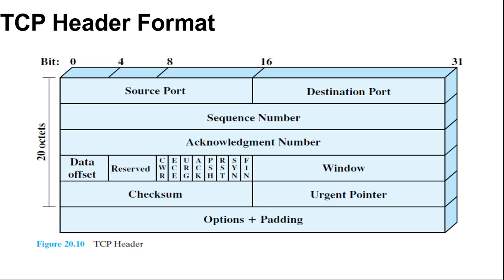Next flag is URG: urgent pointer field significant. Then ACK: acknowledgement field significant. Then PSH for push function. RST for reset the connection. SYN to synchronize the sequence number. FIN for no more data from sender (finish). Next is window, 16 bits: flow control credit allocation in octets. It contains the number of data octets beginning with the sequence number indicated in the acknowledgement field that the sender is willing to accept. Next, checksum, 16-bit.